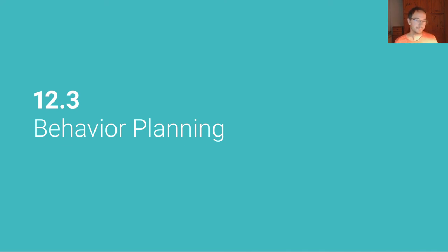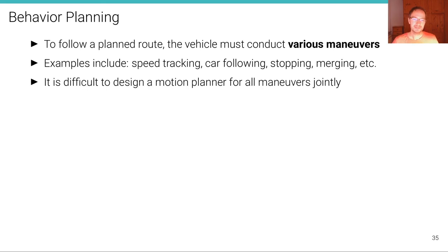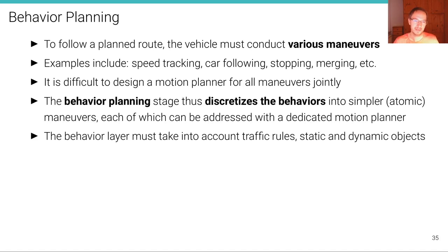Given a planned route, we now have to follow that route. That process is further split into two sub-stages: behavior planning and motion planning. In this unit, we're going to look into the behavior planning stage. To follow a planned route, the vehicle must conduct various maneuvers — examples include speed tracking, car following, stopping, merging, etc. It is difficult to design a motion or path planner for all maneuvers jointly, so the behavior planning stage discretizes the behaviors into simpler atomic maneuvers, each of which can be addressed with a dedicated motion planner on its own.